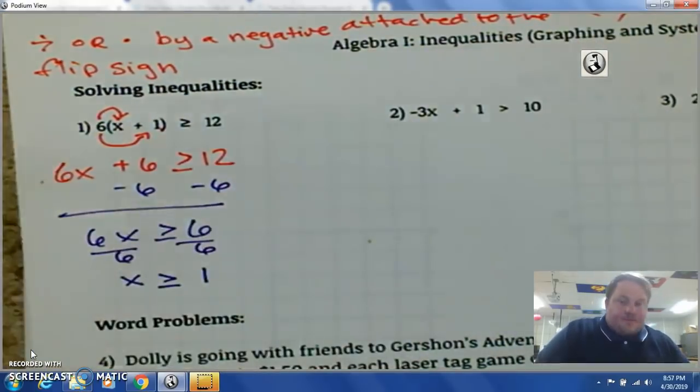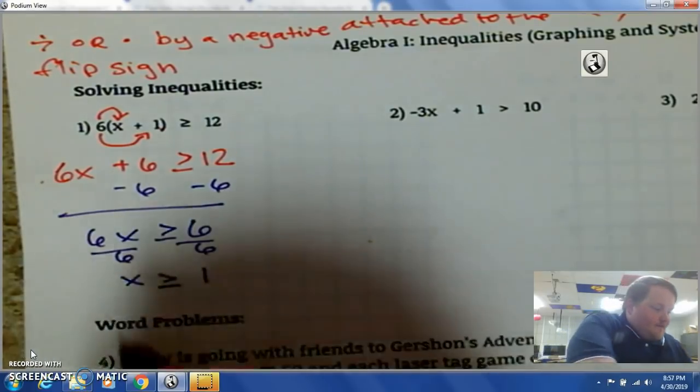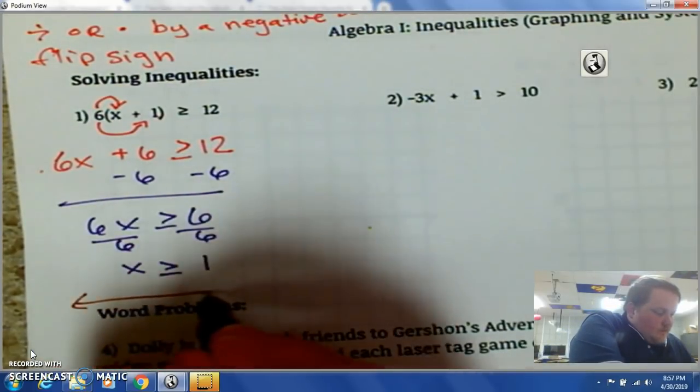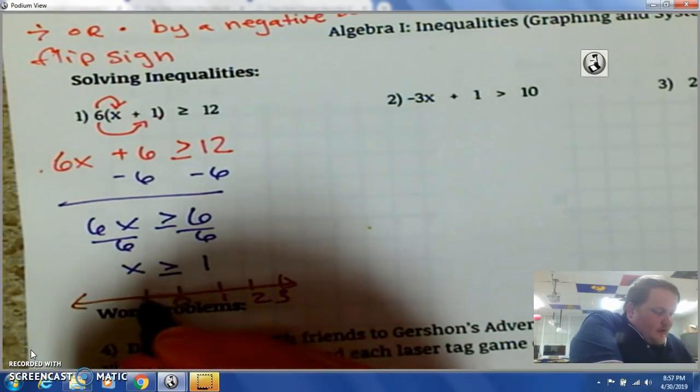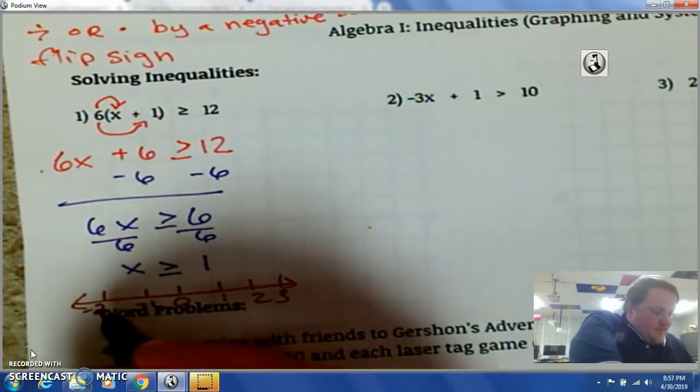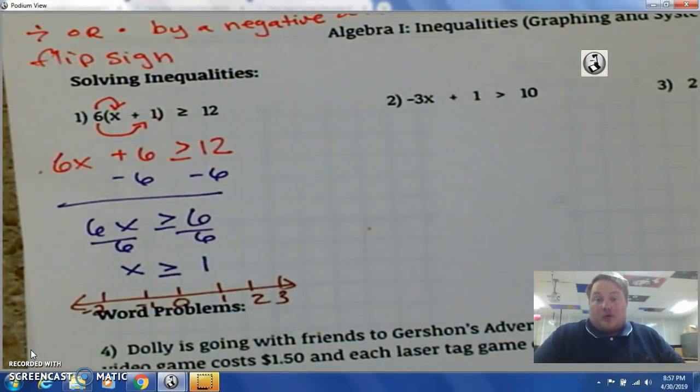So, if I had a number line. And I'm going to go ahead and draw that. It had 0, 1, 2, 3, negative 1, negative 2. Let's just say I have that number line. You can go ahead and pause and draw that. But I'm going to continue.